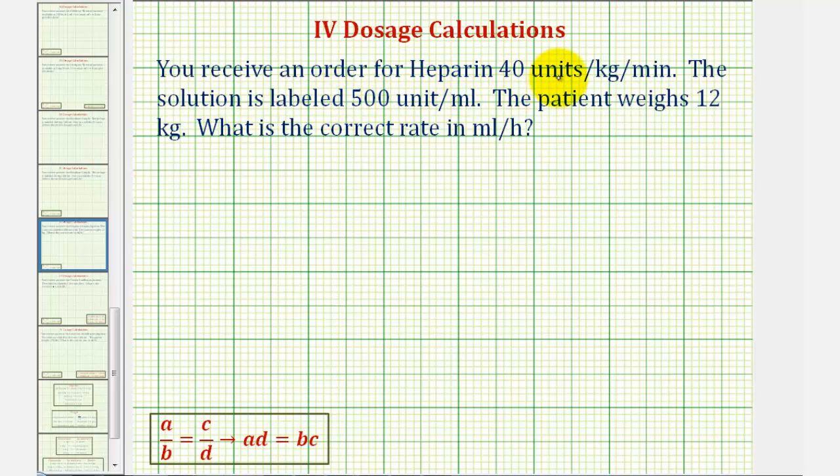You receive an order for heparin 40 units per kilogram per minute. The solution is labeled 500 units per milliliter. The patient weighs 12 kilograms. What is the correct rate in milliliters per hour?